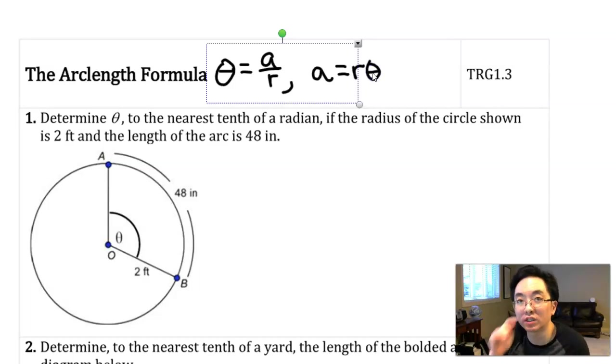Depending on what is being asked in a particular question, you might want to go with one version, another version, or the version where r is isolated. The thing to know about this formula is that it only works when theta is expressed in terms of radians. If you get a question where they give you an angle in degrees, you have to convert that angle in degrees into radians first.